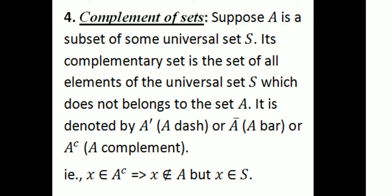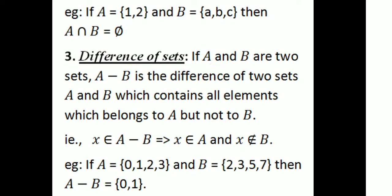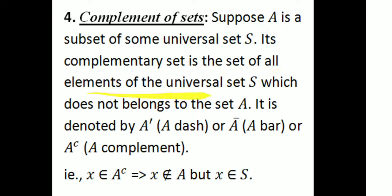The next operation is complement. Suppose A is a subset of some universal set S. Its complementary set is the set of all elements of the universal set S which do not belong to the set A. It is denoted by A dash, A bar, or A complement. That is, X belongs to A complement implies X does not belong to A but X belongs to S.